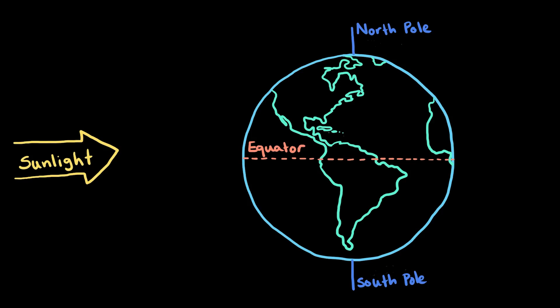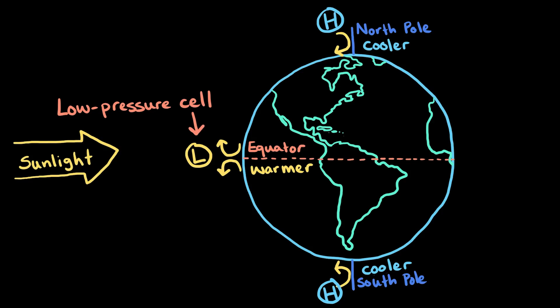This uneven heating of Earth also affects air pressure. Where it's cooler, near the poles, cool air will sink, making the air pressure high. But where it's warmer, near the equator, warm air will rise, resulting in low pressure. This is where the terms low pressure cells and high pressure cells come from.